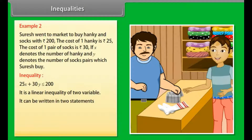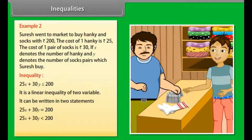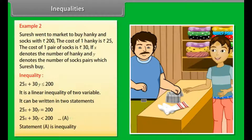It can be written in two statements: 25x plus 30y is equal to 200, and 25x plus 30y less than 200. Name it as A. Statement A is an equality in this case.